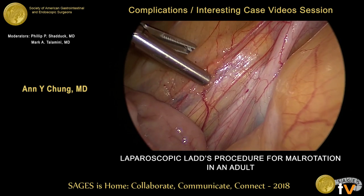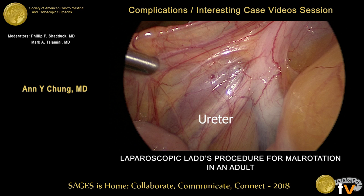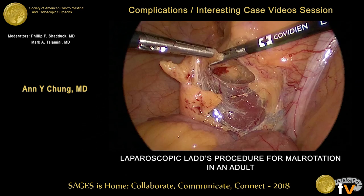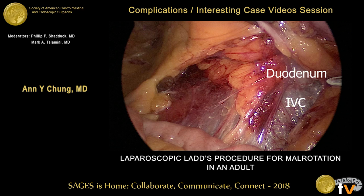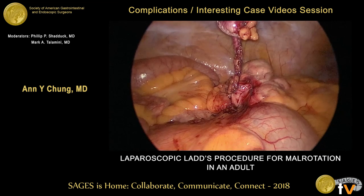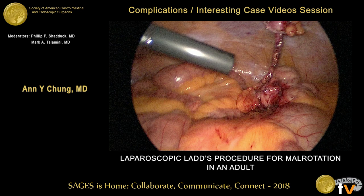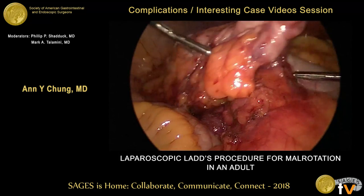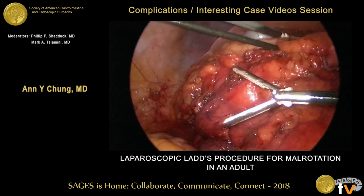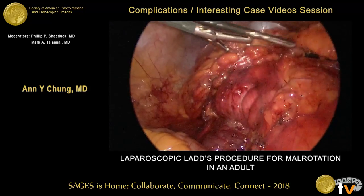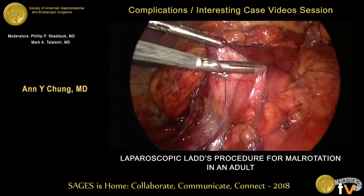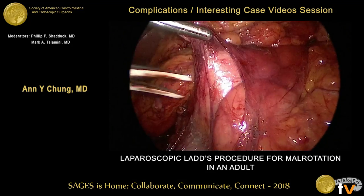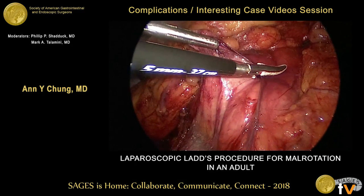As we mobilized to perform our appendectomy, we identified the right ureter lying just lateral to the appendix. We lysed adhesions surrounding the appendix and the psoas muscle was visualized posteriorly. The appendix was overlying the inferior vena cava and the duodenum. We then completed our appendectomy and removed the appendix using an endocatch bag. At this point, the right colon was flipped medially to expose the duodenum. You can see there are adhesions or LADS bands from the duodenum to the surrounding retroperitoneum and the colon, as well as inner loop adhesions of the duodenum causing some kinking of the bowel.